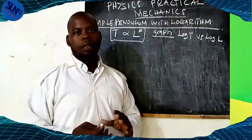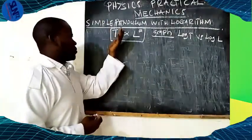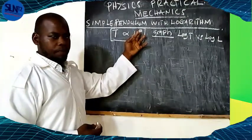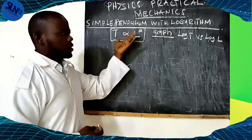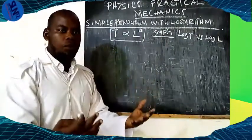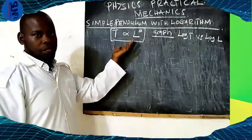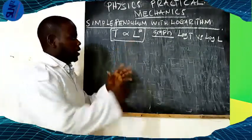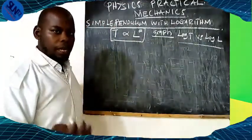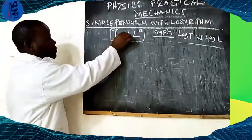This is the periodic time and this is the length of the pendulum. What would be the nature of the graph? What would be the value of A and log K? I will start with this question and show how it is derived to reach log T against log L.